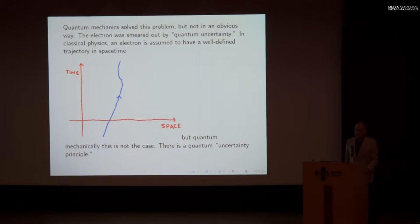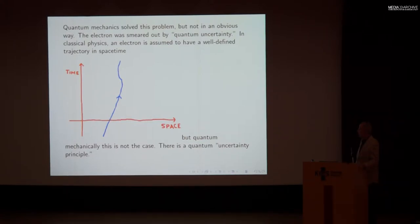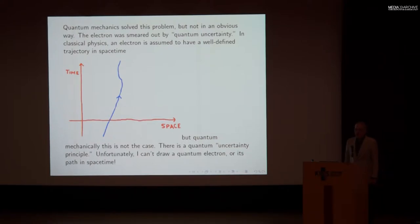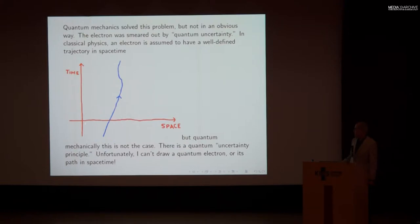There's a quantum uncertainty principle that, in practice, keeps you from having a problem when two electrons collide with each other or with the atomic nucleus. A quantum electron does not follow a definite path in spacetime like a classical particle does. It's a blur where you can say, if you make the right observation, where it ends up, but you can't quite say how it got there.